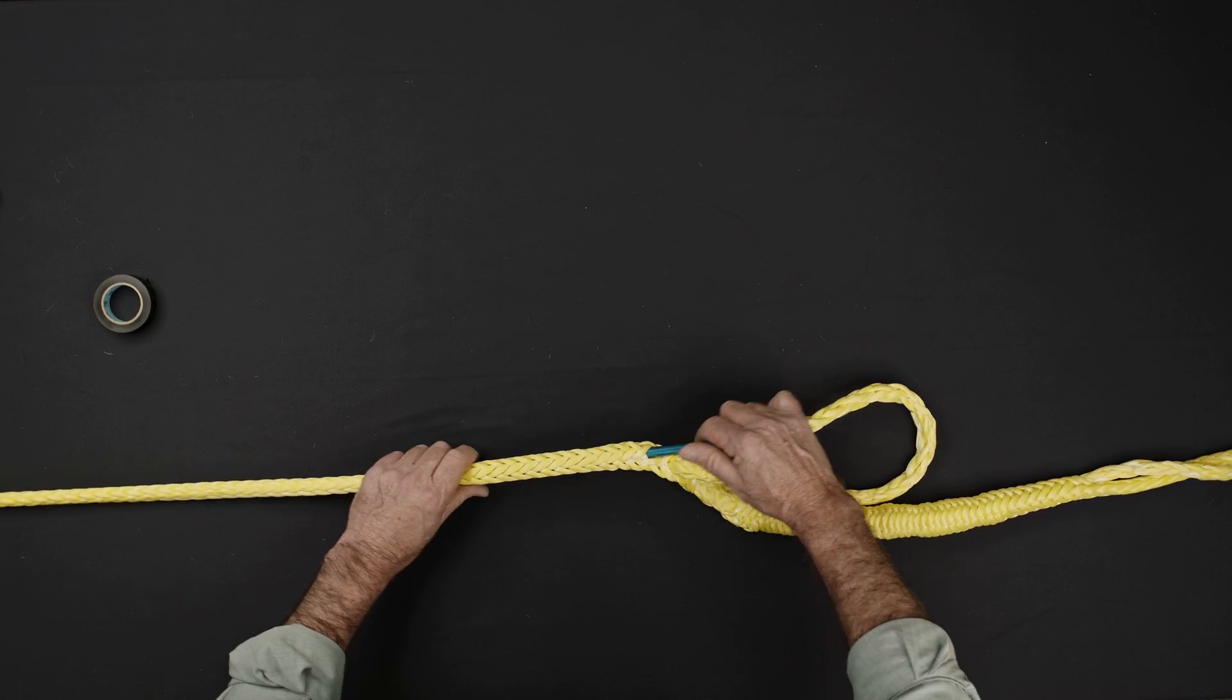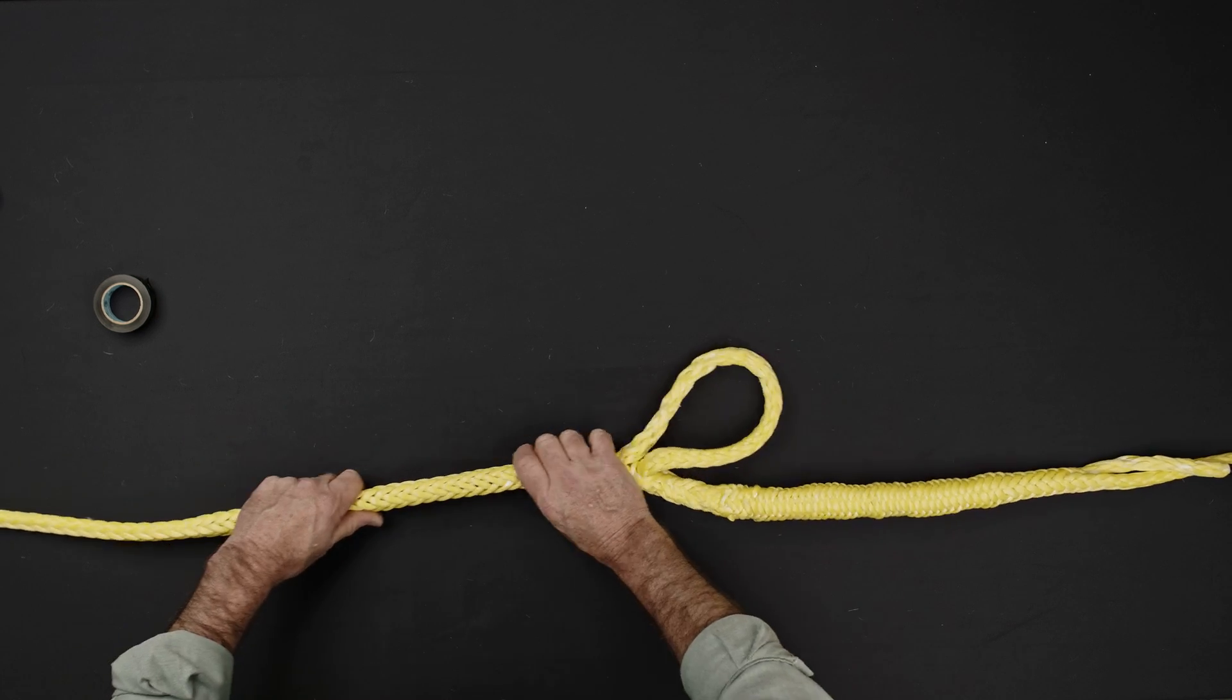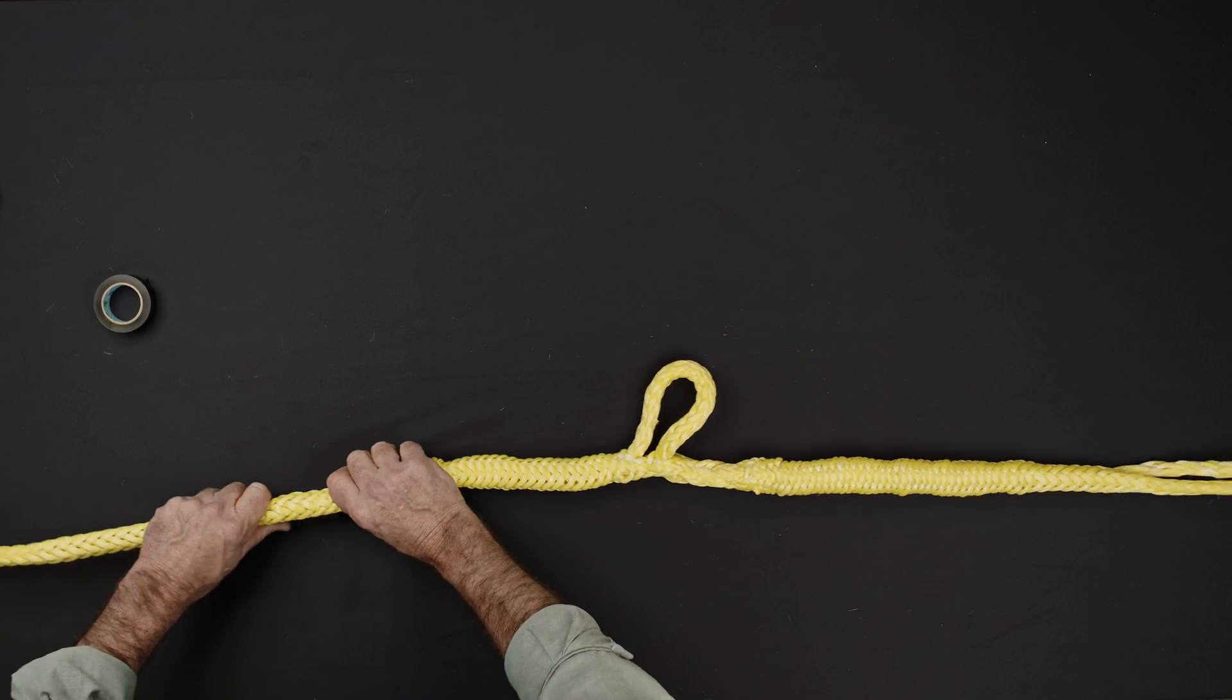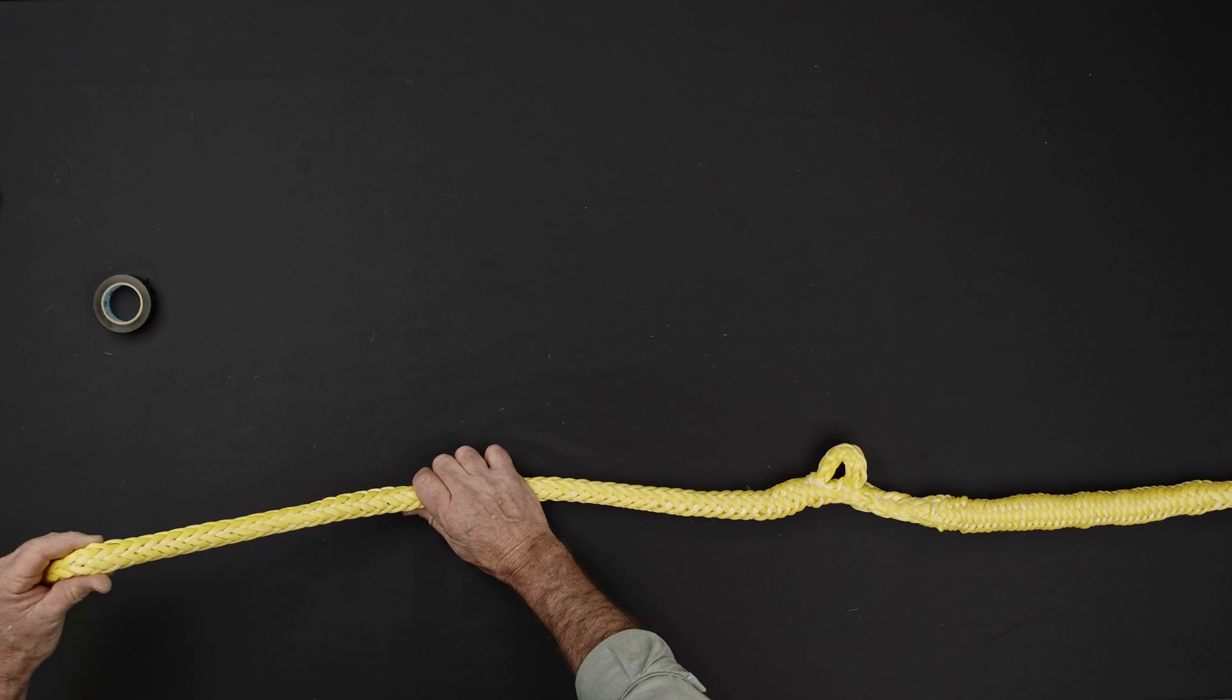Bury the tail of the splice by inserting the fit back into the hollow center of the rope 3 picks down from the previous brummel. Continue working the fit along the length of the rope until the entire tail is buried inside the splice.